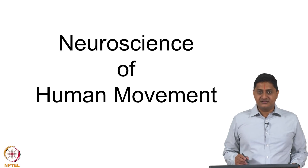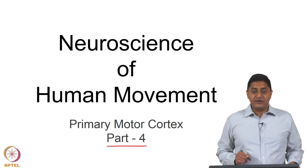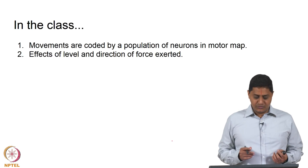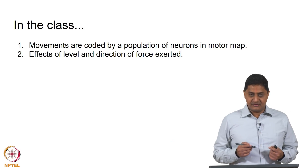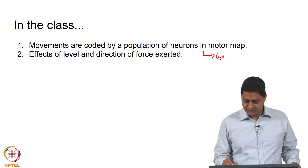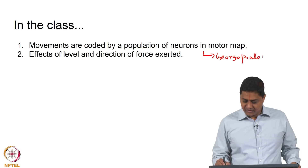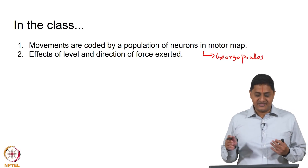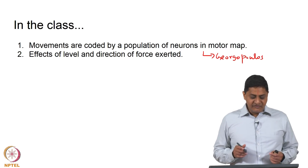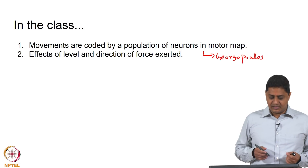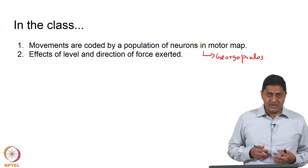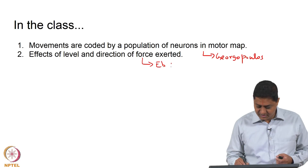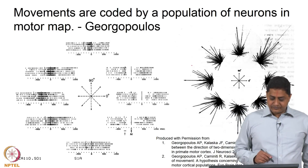Welcome to this class on Neuroscience of Human Movement. This is Part 4 of the class on primary motor cortex. In today's class we will be talking about how populations of neurons contribute to activity or movements. In particular, the work of Georgopoulos, where he showed that movement direction was encoded in a population of neurons. We will discuss how the level and direction of force exerted are represented by neurons in the primary motor cortex, which is the work of Evfetz.